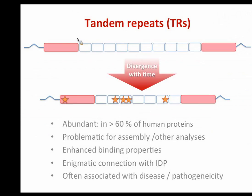Many of you are already aware how complex tandem repeats can be and how they can complicate things. Essentially these are segments of genomic sequences that occur next to each other in tandem, via certain mechanisms that are not so well described. These repeats can propagate, expand, and shrink, and with time they diverge, accumulating mutations, indels, and possibly being affected by recombination events.